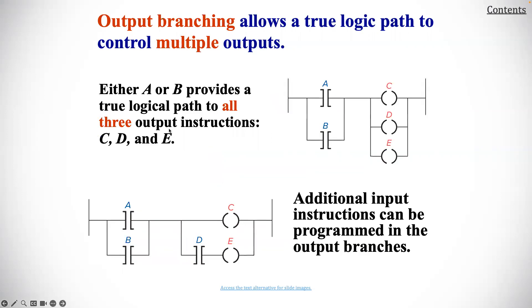Output branching allows a true logic path to control multiple outputs. Either A or B provides a true logic path to all three output instructions: C, D, and E. Additional input instructions can be programmed in the output branches.